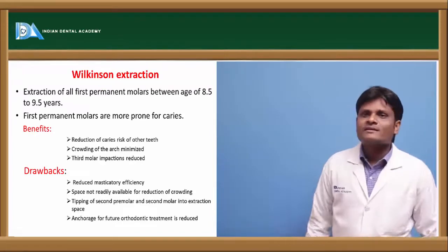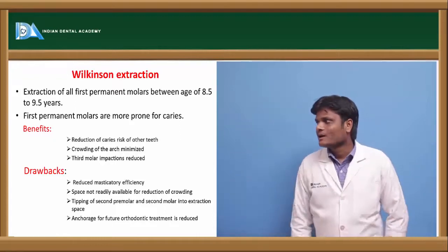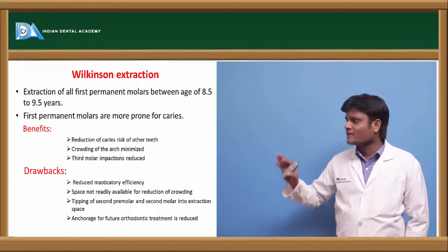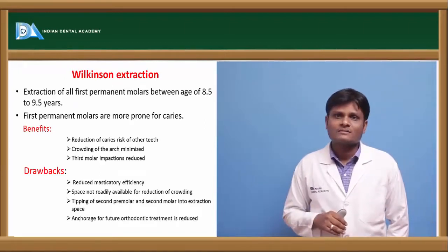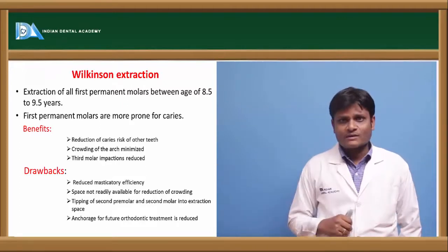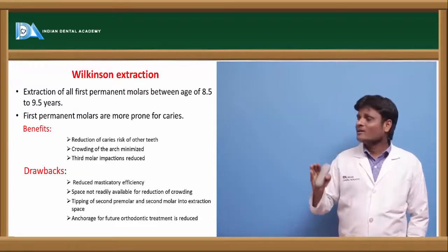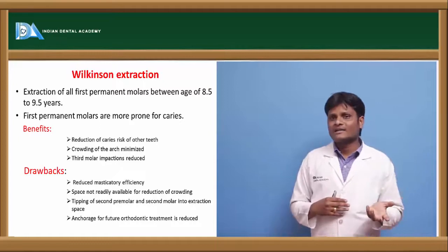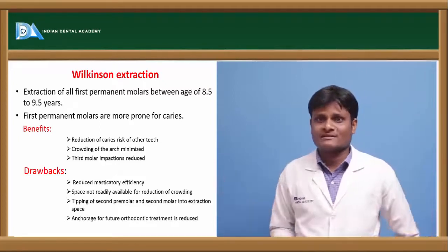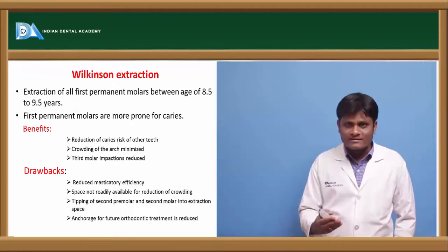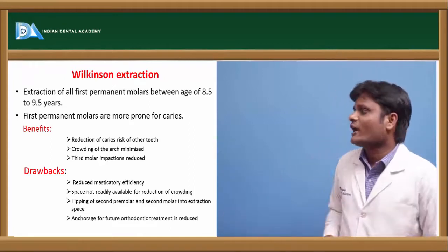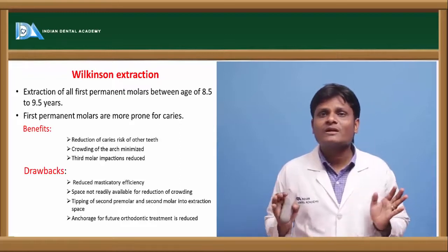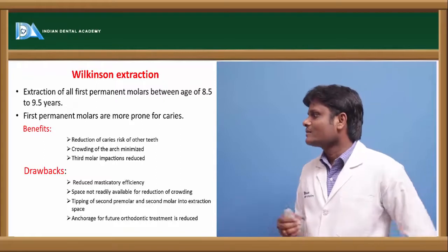As first permanent molars are the teeth most prone for caries, we go for extraction of first permanent molars by the age of 8.5 to 9.5 years — that is, after the eruption of the first and second premolars. Thereby, the erupting second molar and third molar will take the place of the first and second molars respectively. This is called Wilkinson extraction. The benefits are: reduction of caries risk, as extracting these caries-prone teeth eliminates risk to other teeth. Crowding in the anterior region can be reduced to some extent, and there will be no impaction of the third molar, as it takes the place of the second molar.